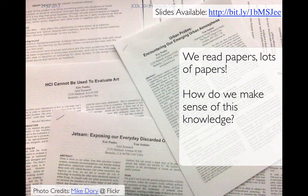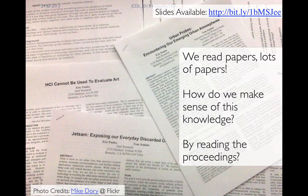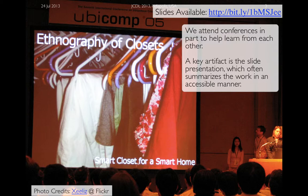One question we always ask ourselves is how do we make sense of all of this knowledge that we encounter. Do we just read the proceedings of the conferences if we come across articles that are useful? That's not always the case, because when we have conferences in the computer science community, we often make much effort to attend them. We can be in the same place to learn from each other, and conferences make slide presentations like JCDL, of which I'm doing an offline recording. The slide presentation I'm doing now is often a way of summarizing a paper, which makes it more accessible and easy to digest for someone coming to this work new.